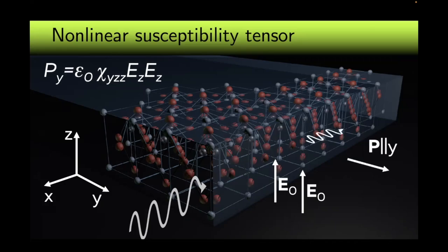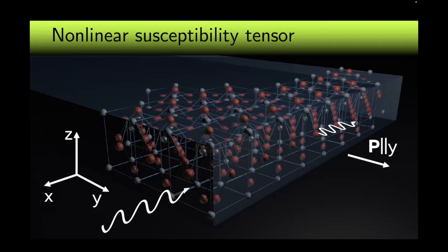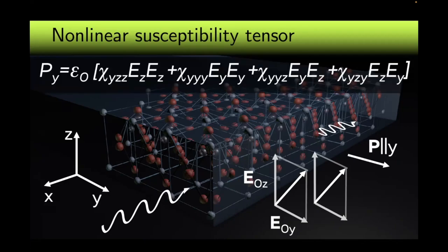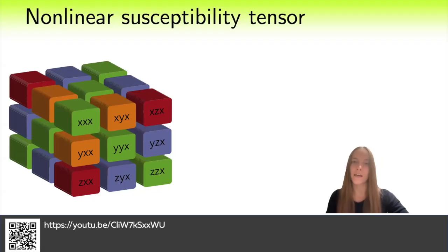And if we want the polarization, for example, along the y-axis, we need χ_yzz component. In a more complex situation, when a plane wave falls in such a way that the incident electric field has, for example, both z and y components, the polarization along the y-axis will be connected with the field components by four terms for all possible combinations of the field components.